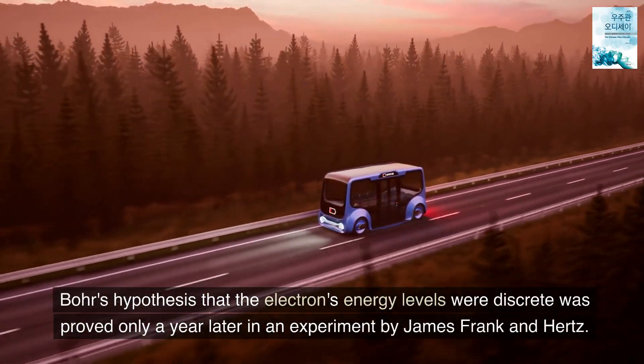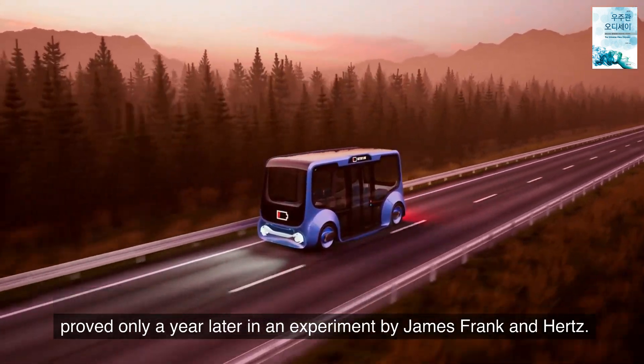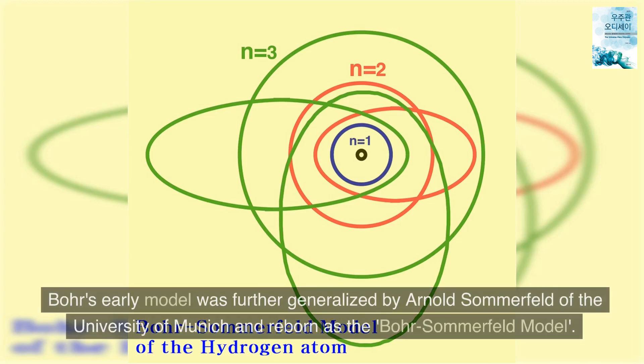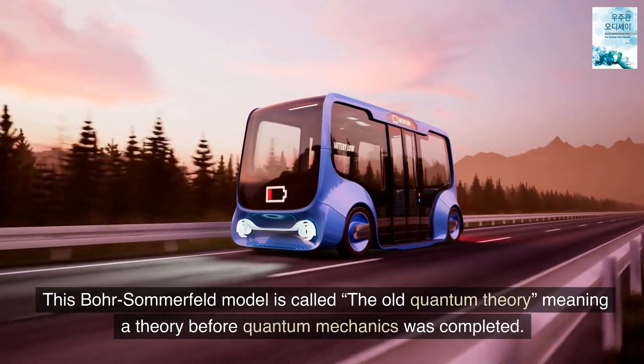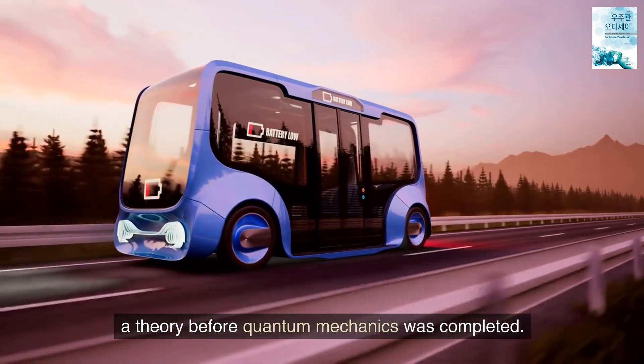Bohr's hypothesis that the electrons' energy levels were discrete was proved only a year later in an experiment by James Frank and Hertz. Bohr's early model was further generalized by Arnold Sommerfeld of the University of Munich and reborn as the Bohr-Sommerfeld model. This Bohr-Sommerfeld model is called the old quantum theory, meaning a theory before quantum mechanics was completed.